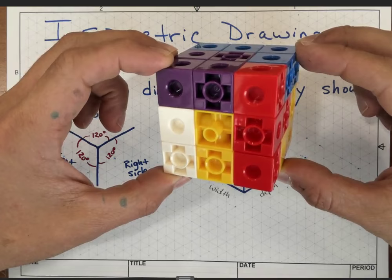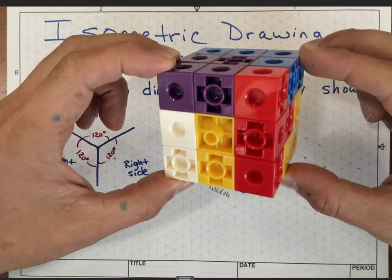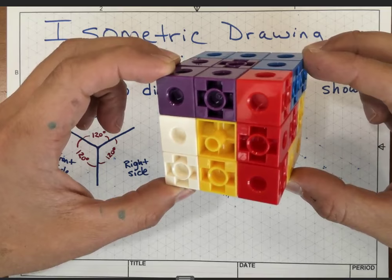An isometric drawing is one that's going to allow you to see the dimensions of width, height, and depth, presenting them all in proportion. Right now I'm presenting width and height much more strongly than depth.